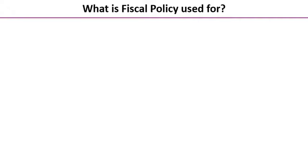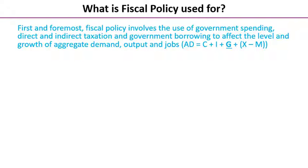So what do we use fiscal policy for? First and foremost, it's about using spending, tax, and borrowing to affect aggregate demand — one of the main components being C plus I plus G plus X minus M. When we use fiscal policy we can actively manipulate the level of aggregate demand.